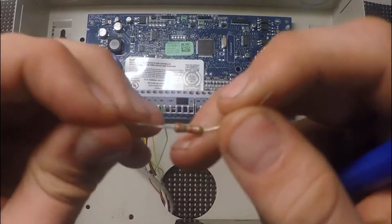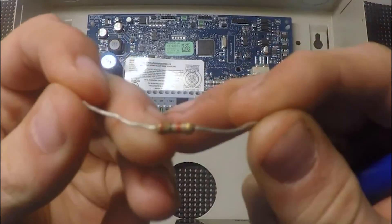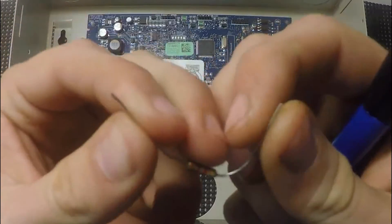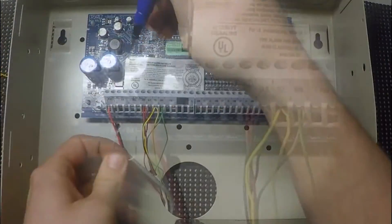And here's our 1000 ohm resistor and we're just going to insert it into the bell positive and bell negative terminals.